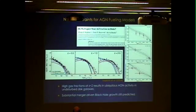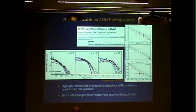By adding high gas fractions, we find you can reproduce moderate-luminosity AGN — 10^44 ergs per second — at redshift 2 through stochastic processes in a regular disk galaxy, without the need for a merger.